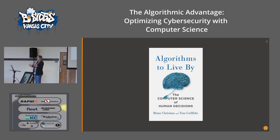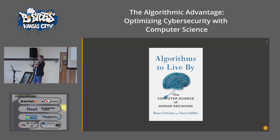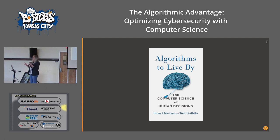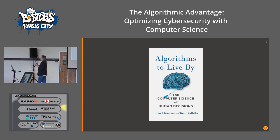I read the book and basically every chapter is a different algorithm applied to life. I thought we can apply these to cybersecurity too, because algorithms are just frameworks for how to do things. That's kind of how this talk was born. For the rest of this talk, I picked three of my favorite algorithms from the book. I'm going to explain each algorithm, show a fun application to life or something, and then an application to running a cybersecurity company or department.